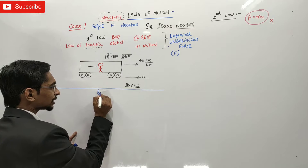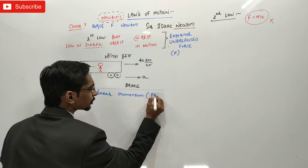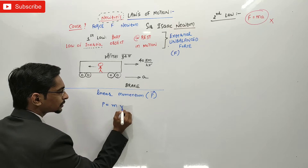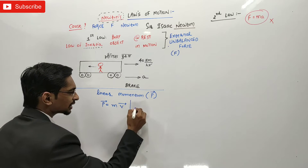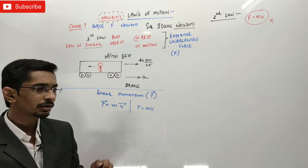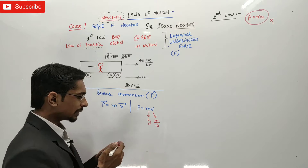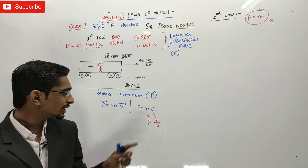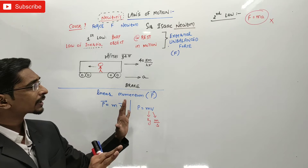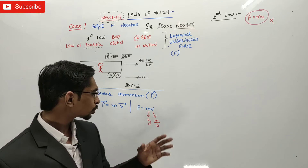Now, let's briefly discuss what linear momentum is. It is denoted by symbol P. It is a vector physical quantity. It is the product of mass and velocity — so P̄ = M · V̄, or simply P = MV. The unit of P is kg·m/s, since mass is in kg and velocity is in m/s. We are discussing linear momentum because we are purely considering linear motion — straight line motion.